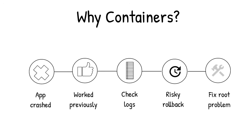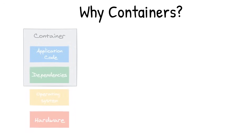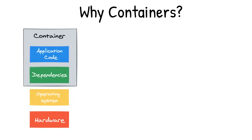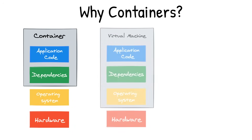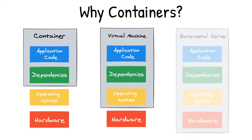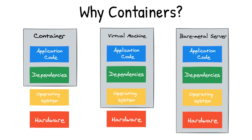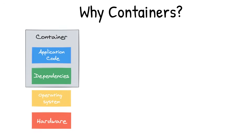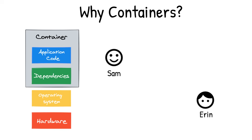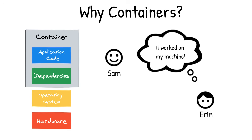Erin and Sam decide to fix the root problem once and for all using containers. Containers decouple the OS from the application dependencies and the code. Due to this abstraction, Sam can log into each machine and instruct it to run Erin's containers. It will pull down just the files that have changed since the last container and run the new code. If you need to roll back, all the old files are still there as container images are immutable. By using containers, Erin and Sam solved the 'it worked on my machine' problem.